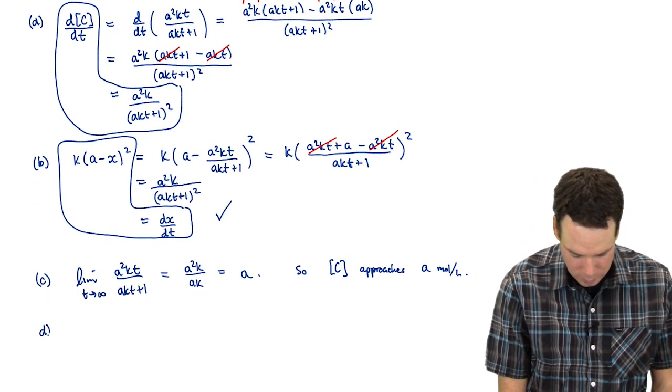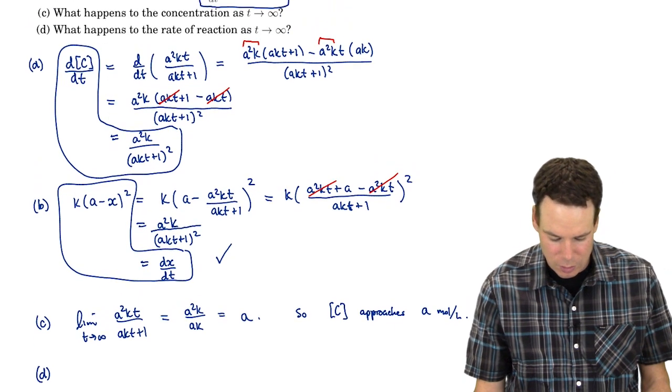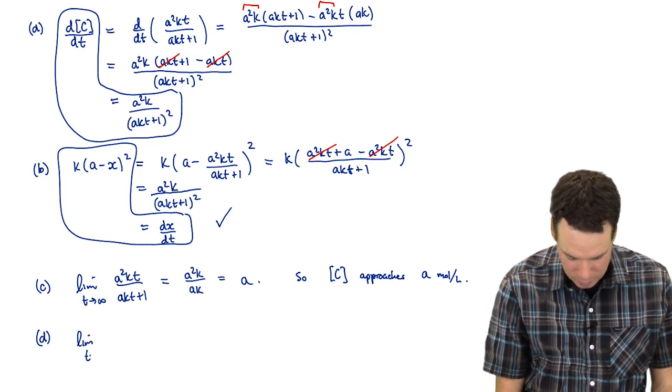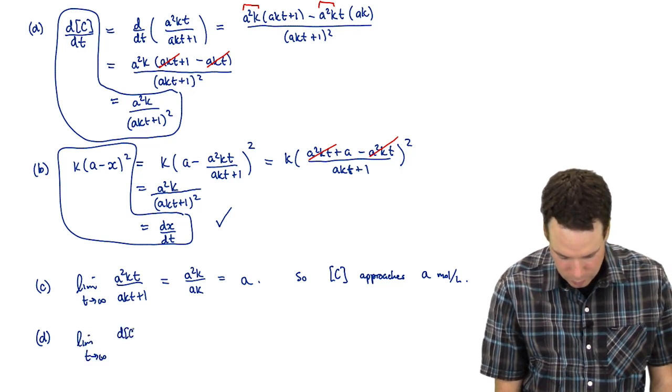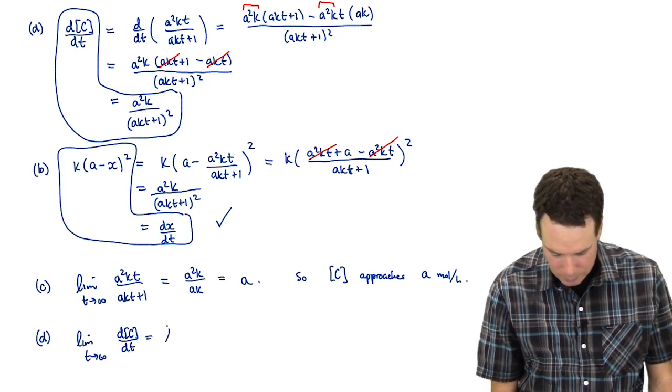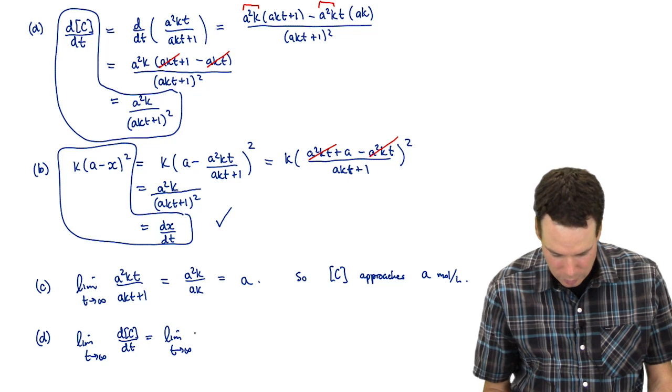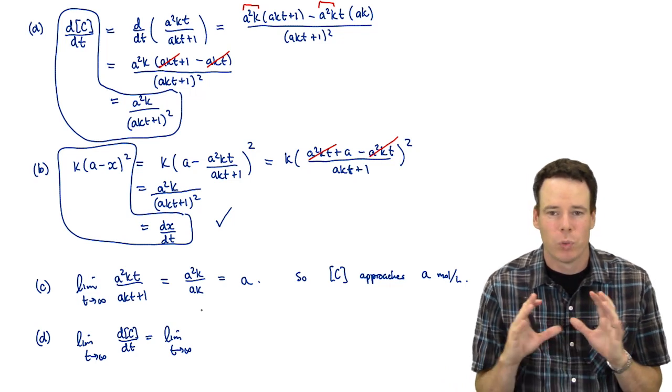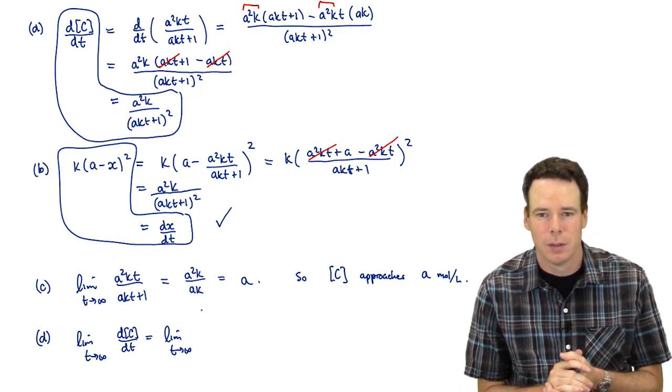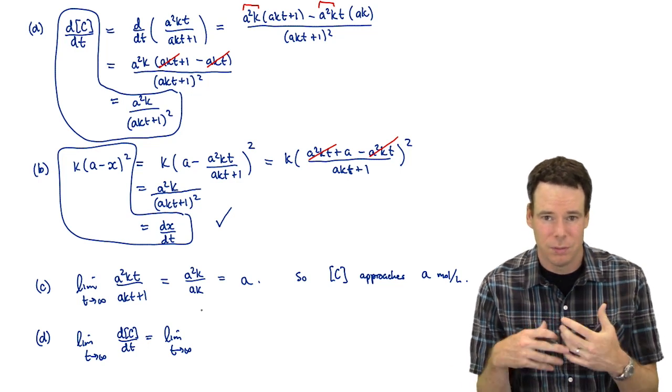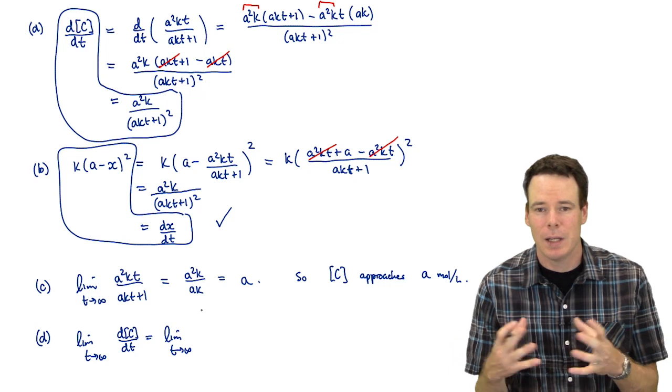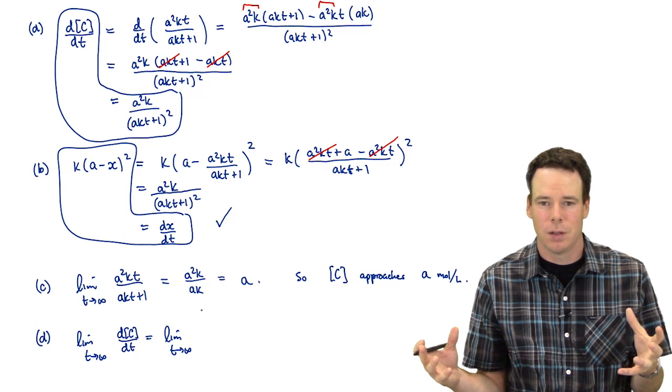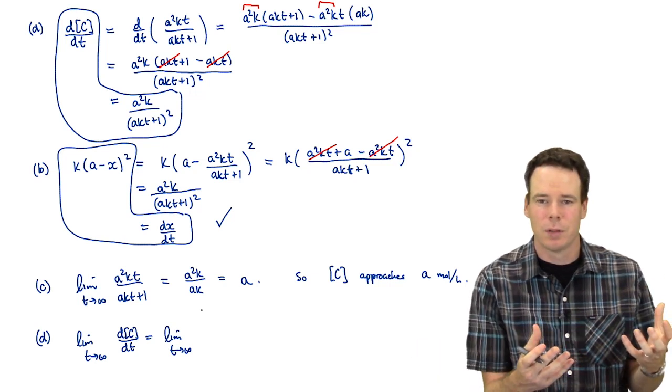And the last one is, what happens to the rate of reaction as t goes to infinity? So here we're looking at the limit as t goes to infinity of the derivative of C with respect to t. And before I write this down, let's just think. What should happen? Your reaction's going on. After a really long time, what do you expect to happen? Well, the reaction should finish. Nothing more should be happening. So what's the rate of change in our product? Well, if the reaction's done, all our product is produced, it's not going to change anymore, so the value should be 0.